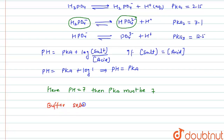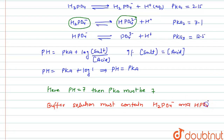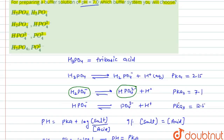This means the buffer solution must contain H2PO4⁻ and HPO4²⁻. Therefore, the correct answer is the second option: H2PO4⁻ and HPO4²⁻.